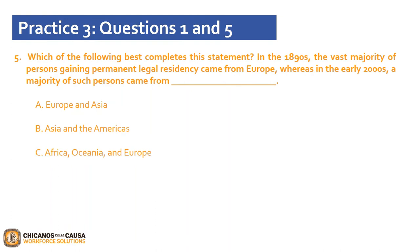Let's answer question 5: which of the following best completes the statement? In the 1890s, the vast majority of persons gaining permanent legal residency came from Europe, whereas in the early 2000s, a majority came from — A. Europe and Asia; B. Asia and the Americas; C. Africa, Oceania, and Europe. If you look at the circle graph labeled 2000–2009, the majority came from Asia at 34% and the Americas at 43%. Therefore, our answer is B: Asia and the Americas.